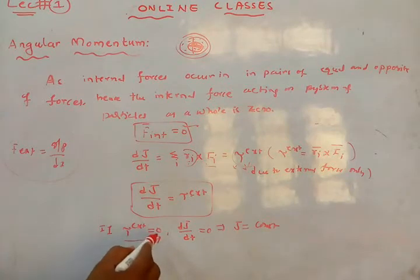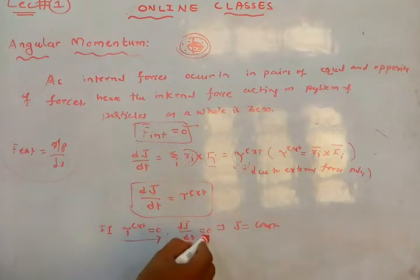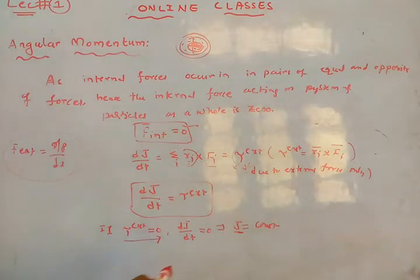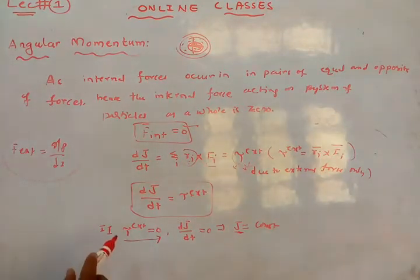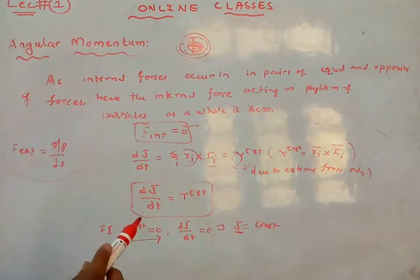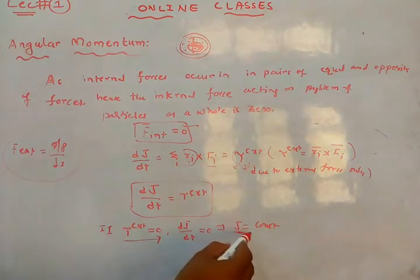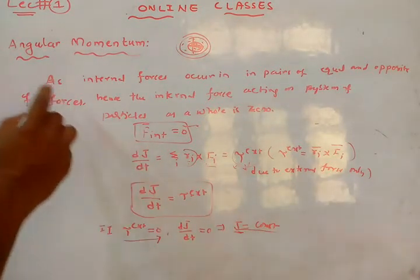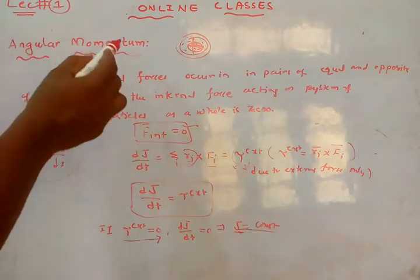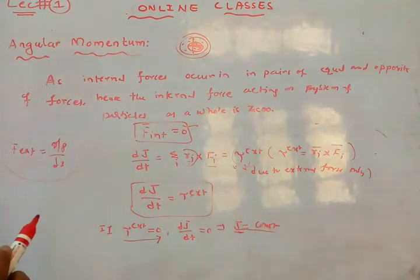If tau external equals zero, then dJ/dt equals zero, which means J is constant. Here J is the angular momentum. So if the external torque is zero on a system of N particles, the angular momentum is constant. This is the second theorem — conservation of angular momentum.